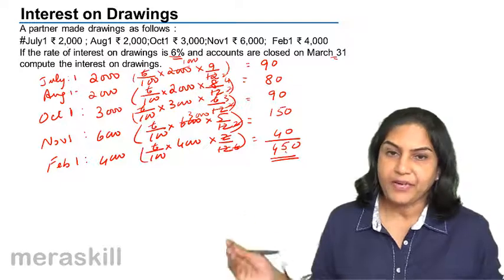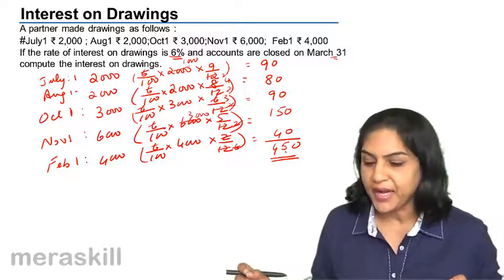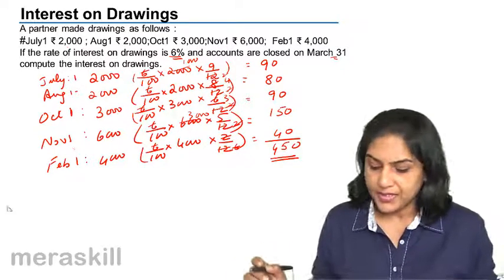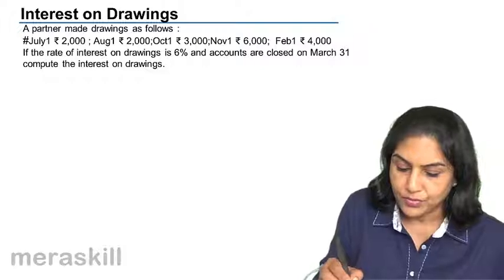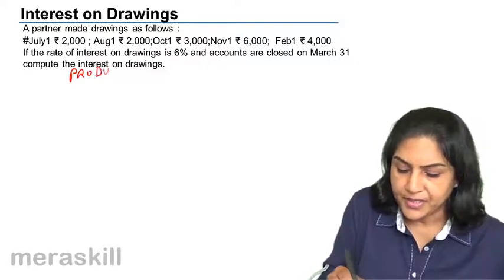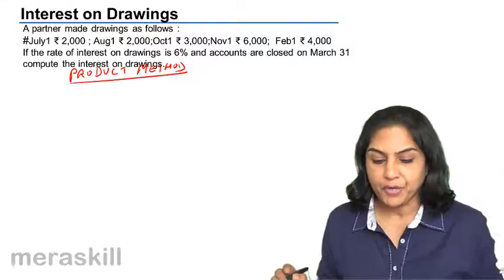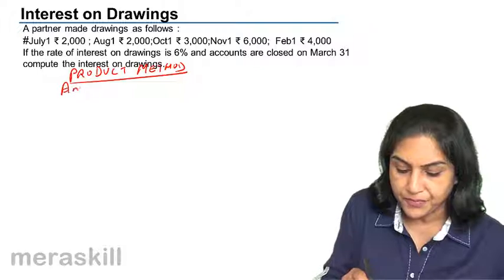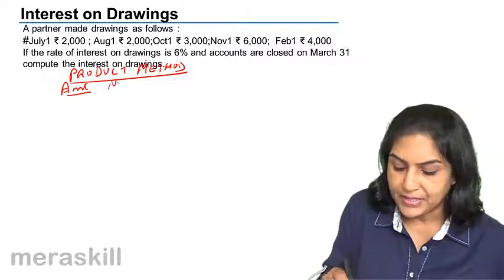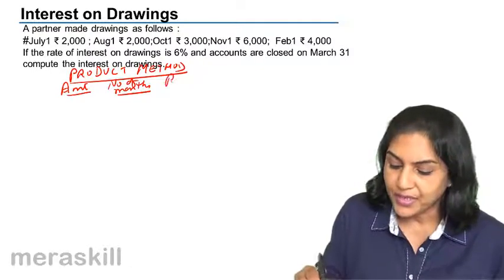So individually, we have applied the rate percent for the amount, for the period for which the drawings have been made, and we have computed for each of the 5 drawings. The same thing can be discussed under the product method. Under the product method, it is slightly shorter. How do you compute under the product method? You take the amount of drawings, the amount involved, the number of months, and what you get is the product.